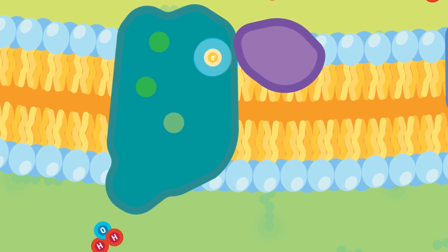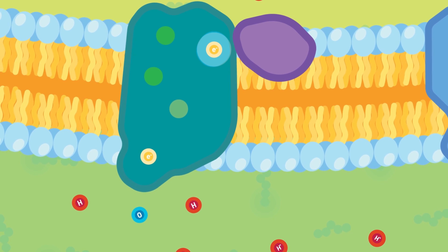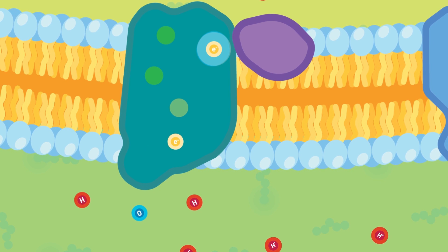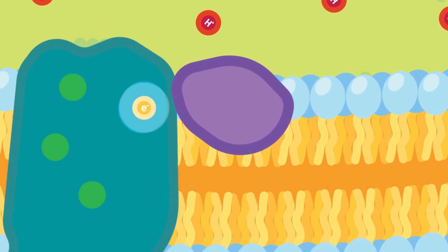During this process, water is split into oxygen and hydrogen ions, releasing electrons. This is how the electron in the chlorophyll gets replenished and where the oxygen generated during photosynthesis comes from.